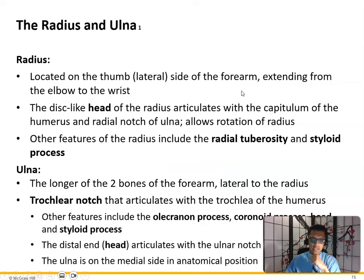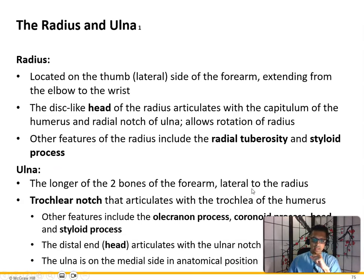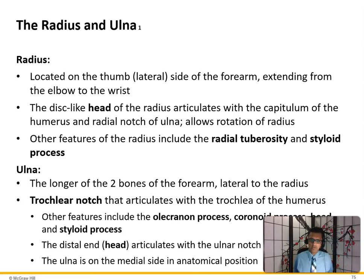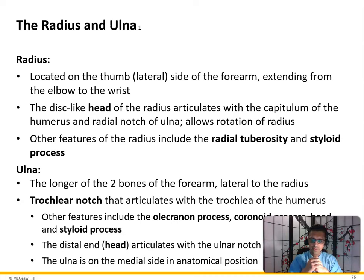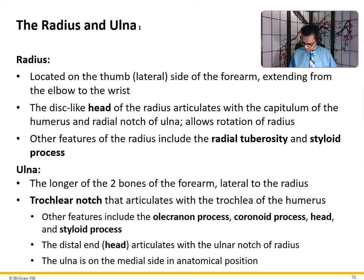The radius is located on the thumb side — the lateral side of the forearm — extending from the elbow to the wrist. The disc-like head of the radius articulates with the capitulum of the humerus, and the radial notch of the ulna allows rotation. Other features include the radial tuberosity and styloid process. The ulna is the longer of the two bones; in anatomical position it is medial to the radius, while the radius is lateral.